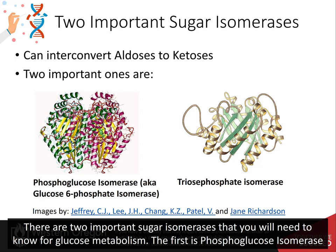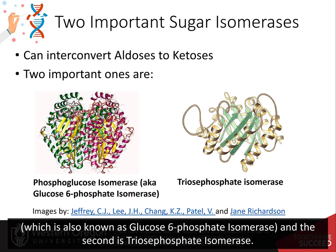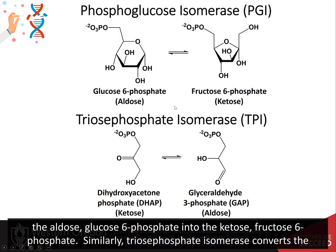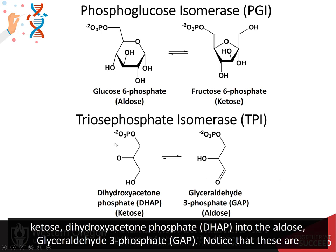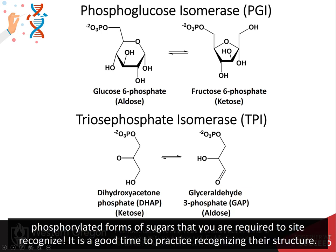The first is phosphoglucose isomerase, also known as glucose 6-phosphate isomerase, and the second is triose phosphate isomerase. Phosphoglucose isomerase converts the aldose glucose 6-phosphate into the ketose fructose 6-phosphate. Similarly, triose phosphate isomerase converts the ketose dihydroxyacetone phosphate (DHAP) into the aldose glyceraldehyde 3-phosphate (GAP). Notice that these are phosphorylated forms of sugars that you are required to recognize — it's a good time to practice recognizing their structure.